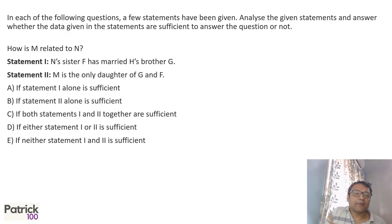How is M related to N? N's sister F has married H's brother G, right? And M is the only daughter of G and F. So if I combine that, I will get the answer that M is a niece. So both the statements are required, C option.